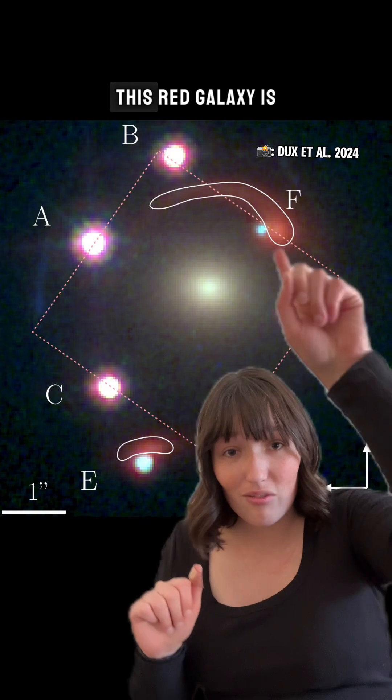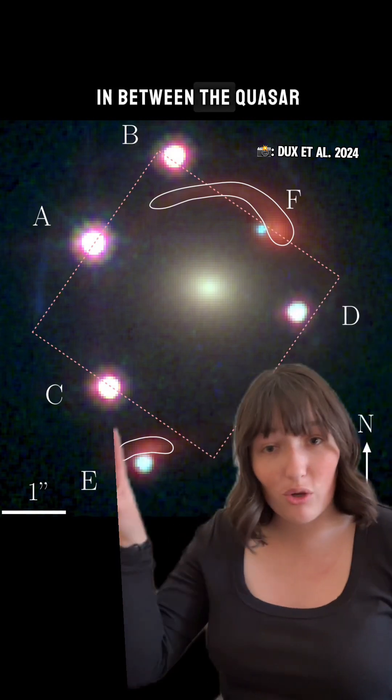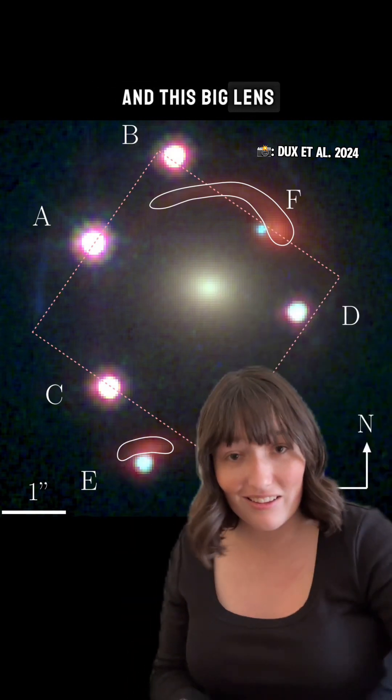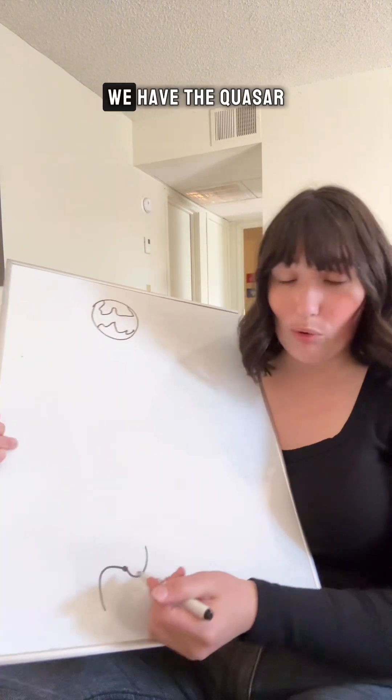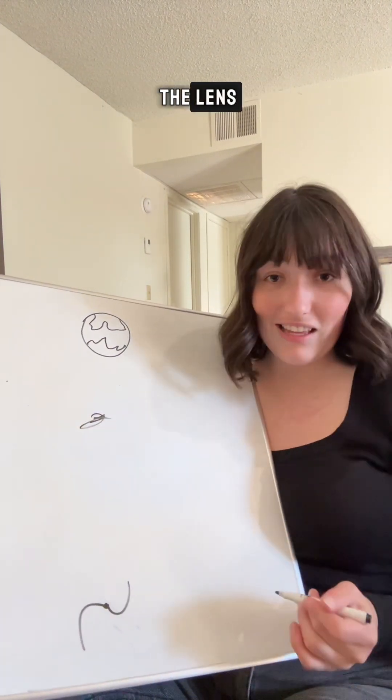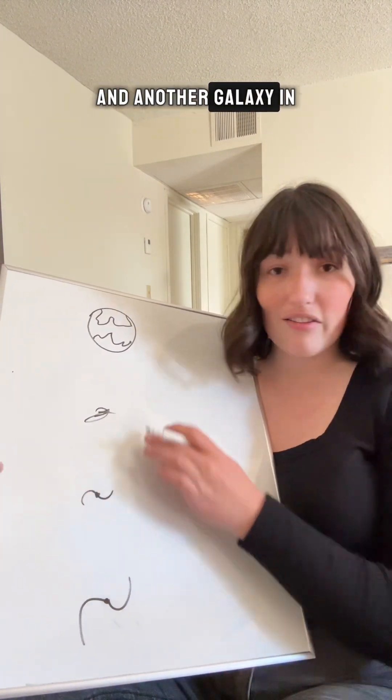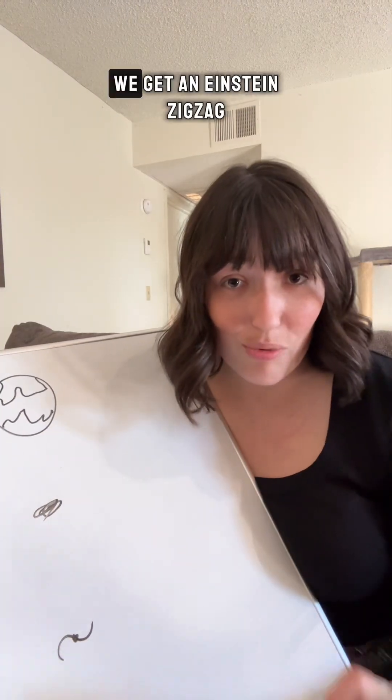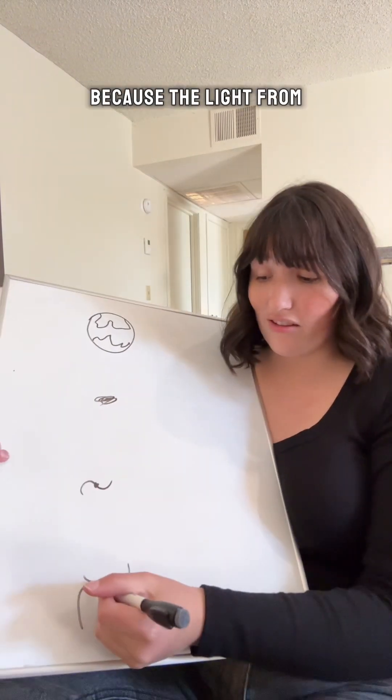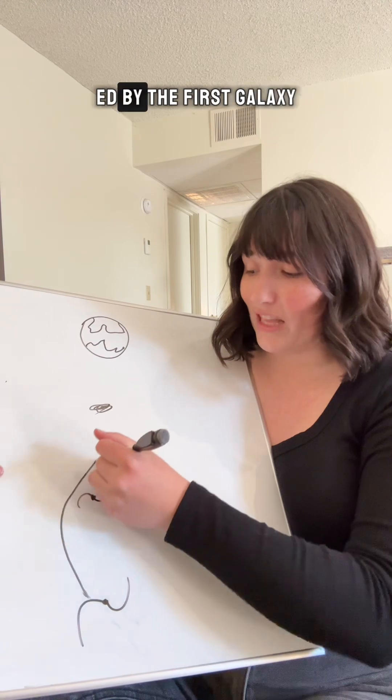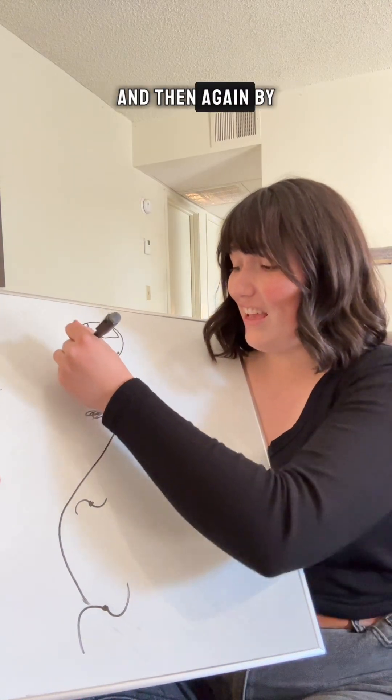But actually, this red galaxy is in between the quasar and this big lens. So coming back to our diagram, we have the quasar, the lens, and another galaxy in between them. And this is how we get an Einstein zigzag, because the light from the quasar gets lensed by the first galaxy, and then again by the second.